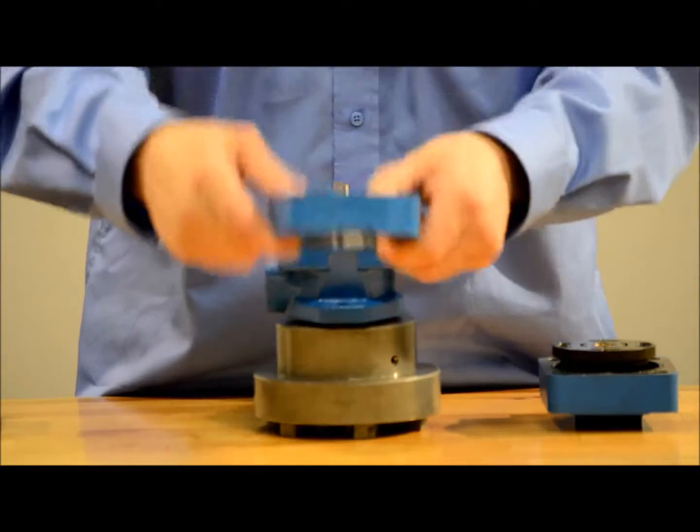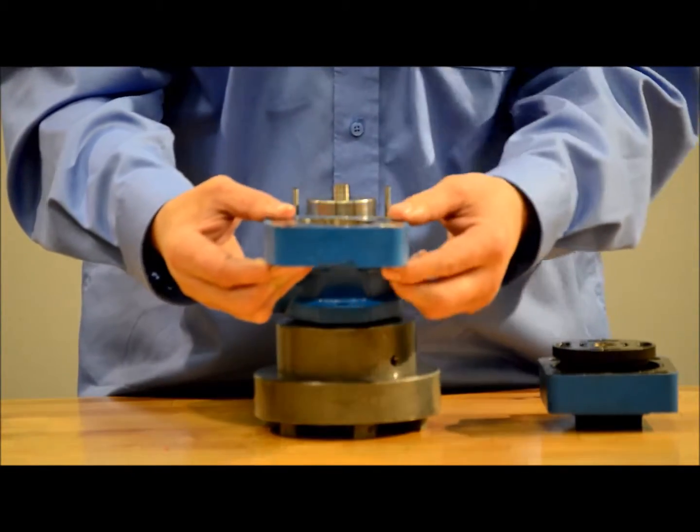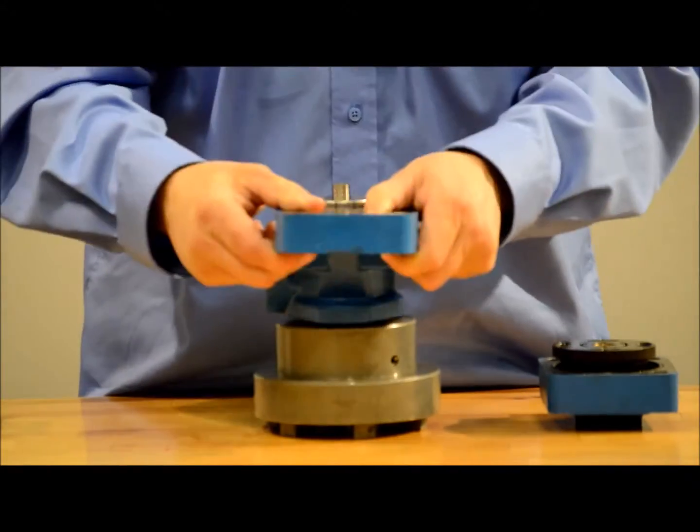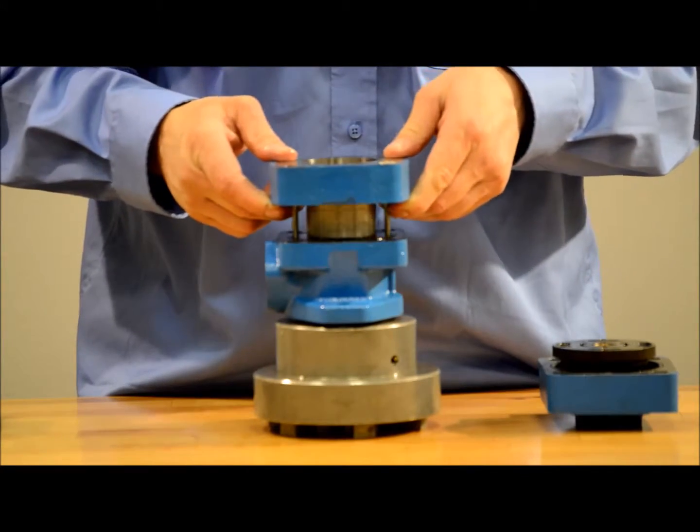So once we flip this over, that's all you need to do to change rotation. So now the arrow's at the bottom, viewing it from the shaft end, it's spinning right-handed. So we'll just slide that back on the pump.